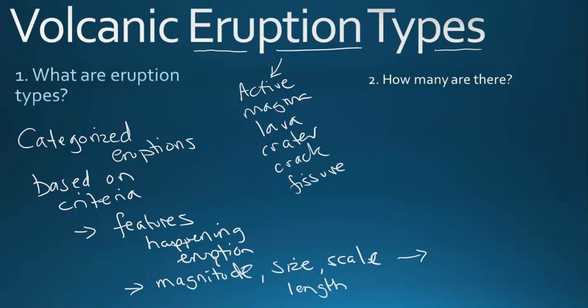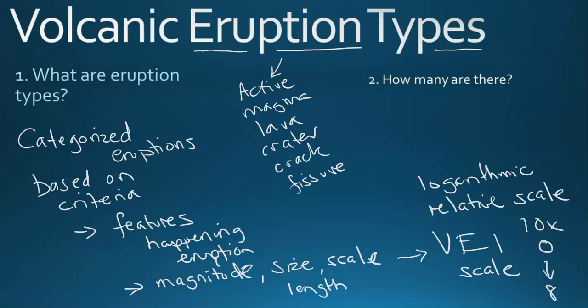This clues in very closely with the VEI scale, which is a relative logarithmic scale that goes up by ten times for every increase in number from zero to eight. Eight being large, zero being non-explosive. The same thing with the VEI scale as with these types of eruptions, but we give them names rather than a number. They're named usually after a famous eruption that pioneered the style or type of eruption.